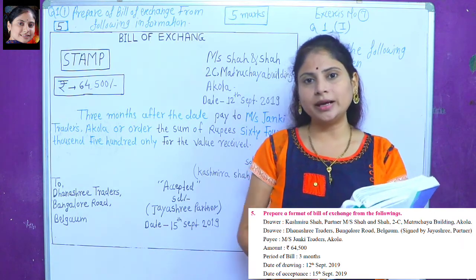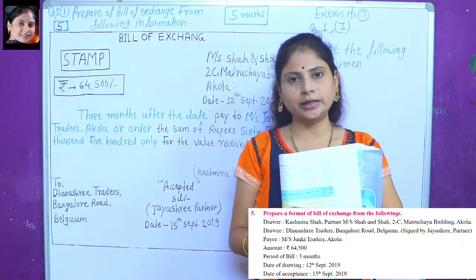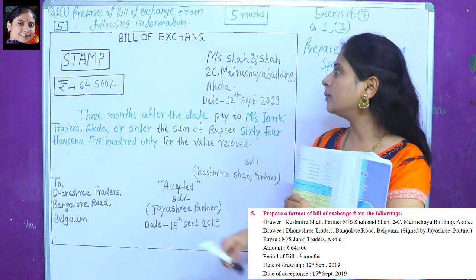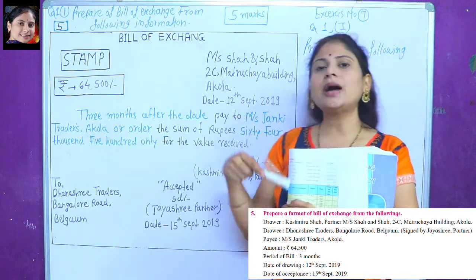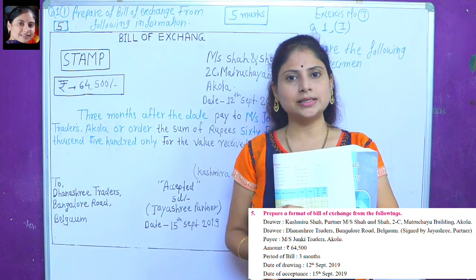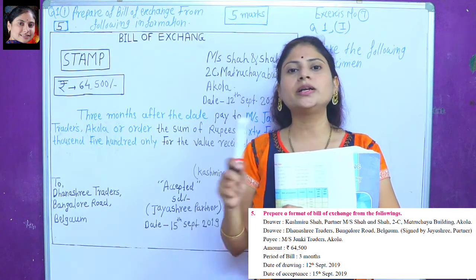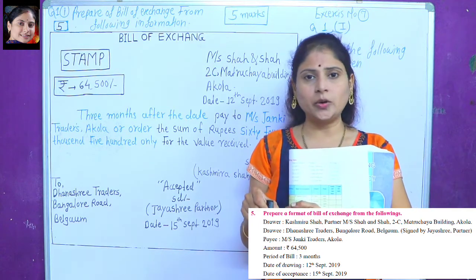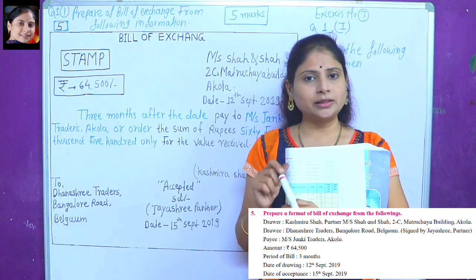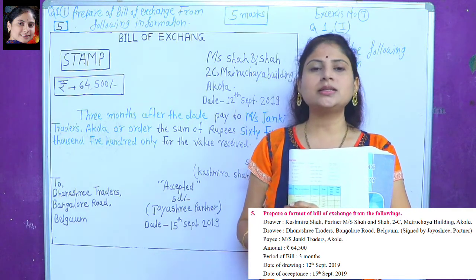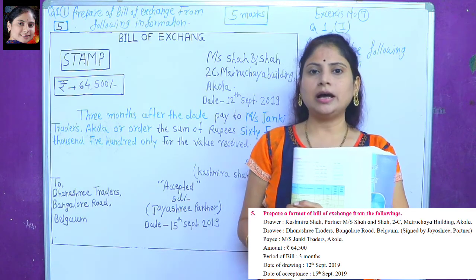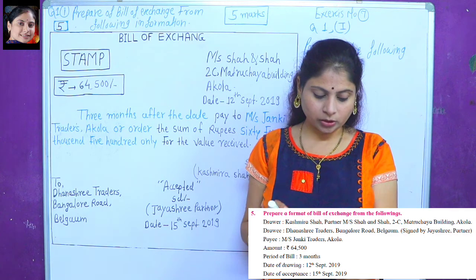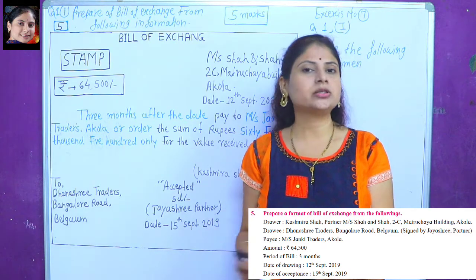The partner is the drawer. The drawee name is Dhanashree Tegers, Bangalore Road, Begum. Signed by Jayashree Partner.